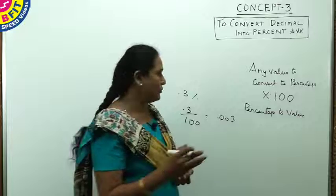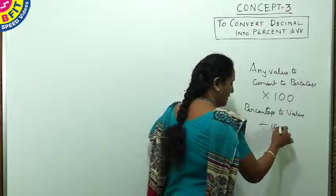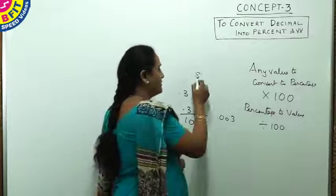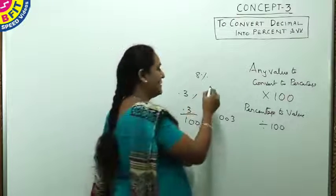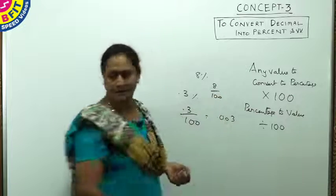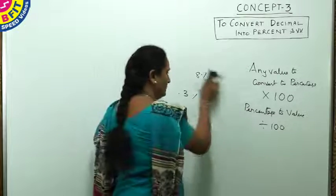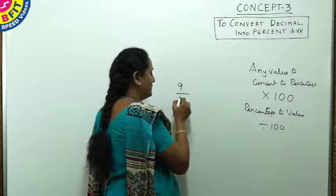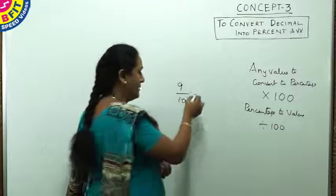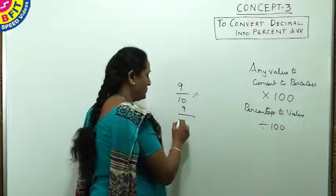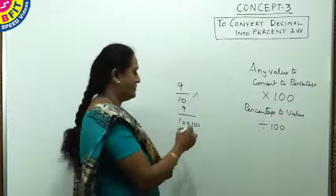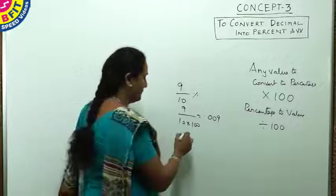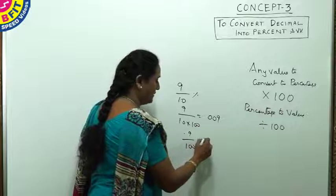To convert a percentage to its value, divide whatever you have by 100. So 8% means the value will be 8 by 100. Or when you have 9 by 10 percent, to find the value, divide it with 100. So 9 by 10 is 0.9, and dividing 0.9 by 100 gives 0.009.